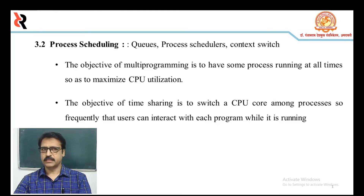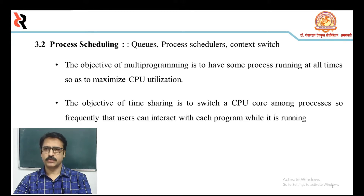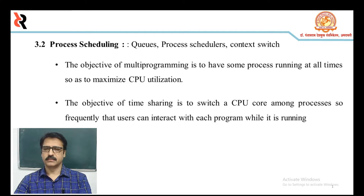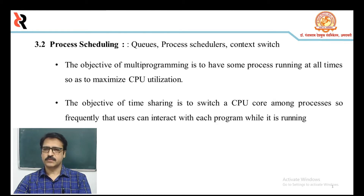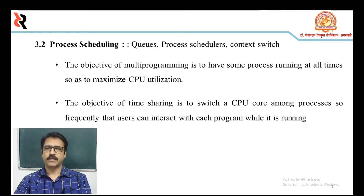The next sub-topic is process scheduling. A multiprogramming operating system allows more than one process to be loaded into executable memory at a time, and for the loaded processes to share the CPU using time multiplexing. The scheduling mechanism is the part of process management that handles the removal of the running process from the CPU and the selection of another process on the basis of a particular strategy.